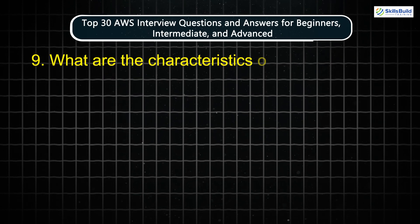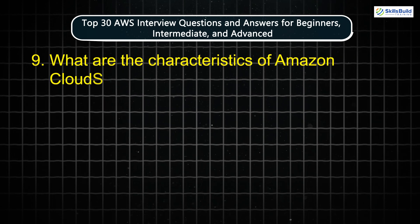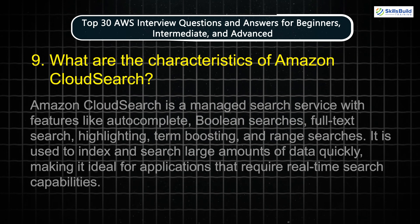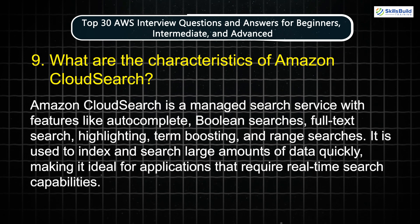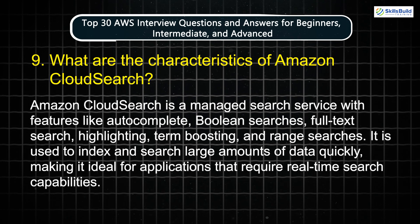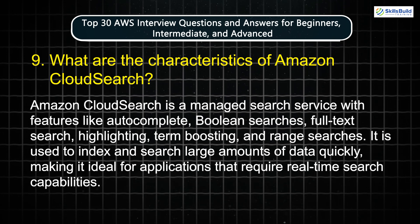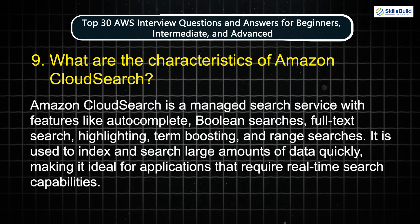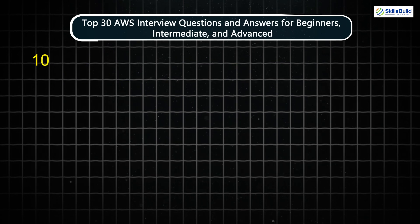Question 9: What are the characteristics of Amazon CloudSearch? Amazon CloudSearch is a managed search service with features like autocomplete, Boolean searches, full-text search, highlighting, term boosting, and range searches. It is used to index and search large amounts of data quickly, making it ideal for applications that require real-time search capabilities.